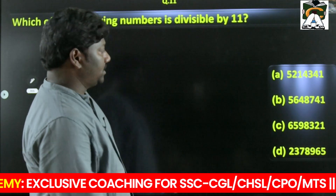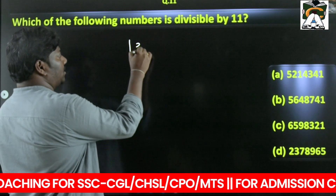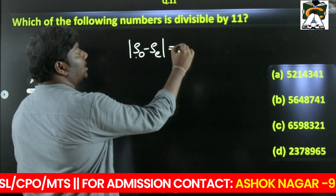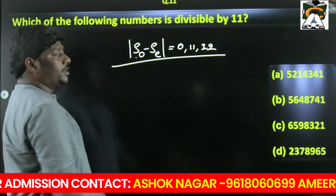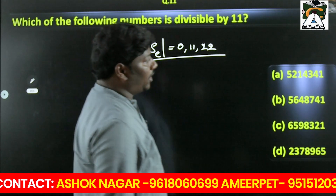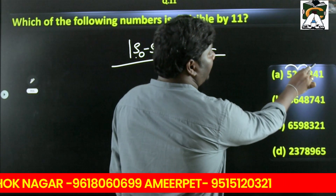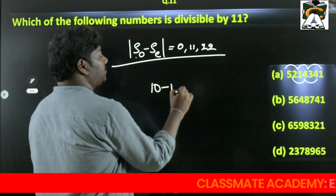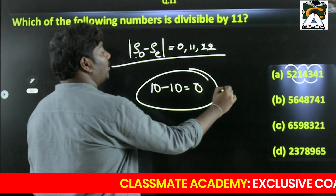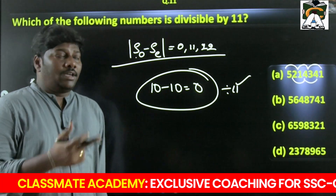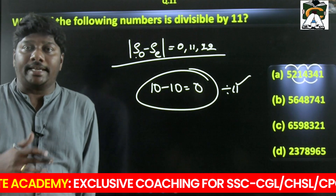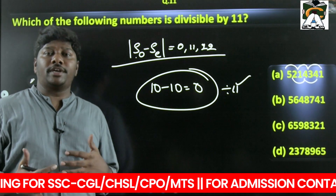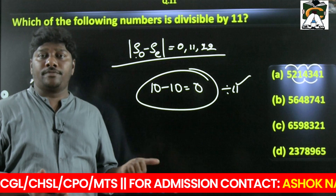Which of the following is divisible by 11? The rule: the sum of digits in odd places minus the sum of digits in even places must be a multiple of 11 (0, 11, 22...). Check alternating digits: 5+1 = 6, 9+4+4 = then 8+2 = 10; you get 10 − 10 = 0, which is a multiple of 11. The first number is the answer. Be confident and accurate — re-verification takes too much time in the exam.